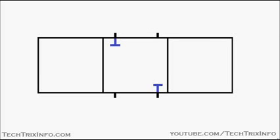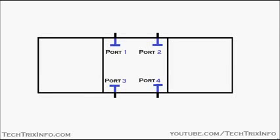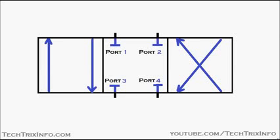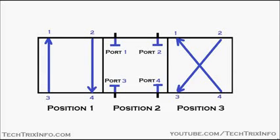Those are the ports in position two, and you can see all the ports are blocked — port one, two, three, and four. So we have four ports in a single position. In every position we have four ports each, and the arrow marks show the direction of flow in position one, position two, and position three.